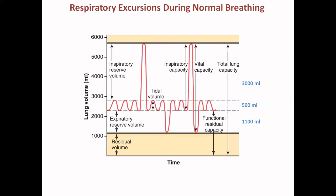There is also air we cannot exhale — the residual volume — which is already present in the lungs and cannot be expelled even by forceful expiration. The expiratory reserve volume and residual volume together are known as the functional residual capacity: air present in the lungs but not used on a regular basis when not exercising or under stress. The expiratory reserve volume is almost 1100 ml and the residual volume is almost 1200 ml.